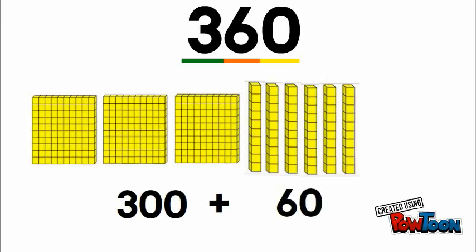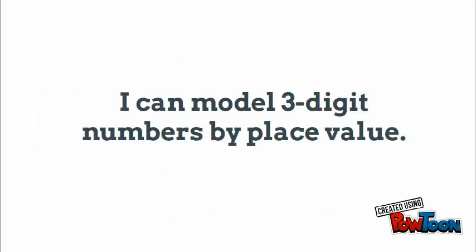We have three hundreds, so we're gonna put 300. We have six tens—six tens makes 60—so we're gonna write 300 plus 60. We're done because there's nothing in the ones place. So 300 plus 60 gives us 360.